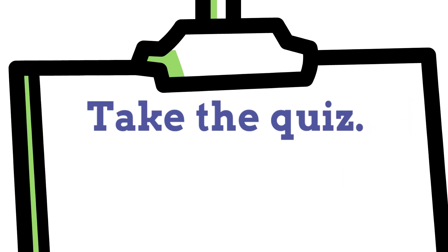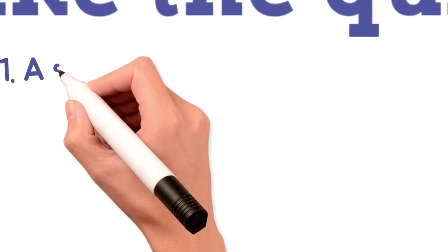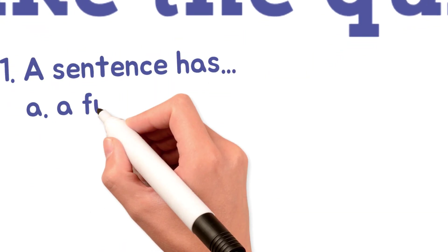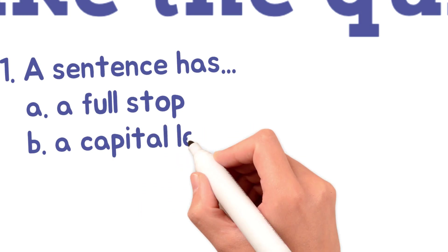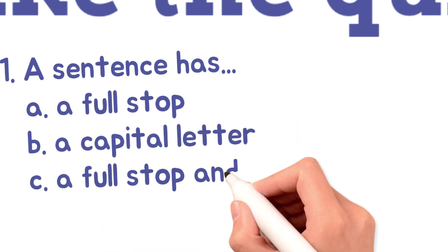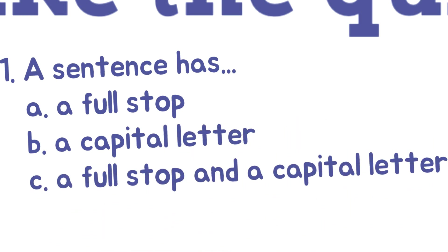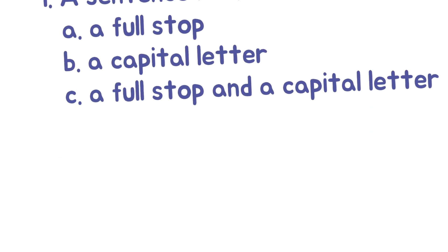The first question is: a sentence has? Now you have three options. The first option is a full stop. The second option is a capital letter and the third option is a full stop and a capital letter. You just think of the answer and keep it with you.